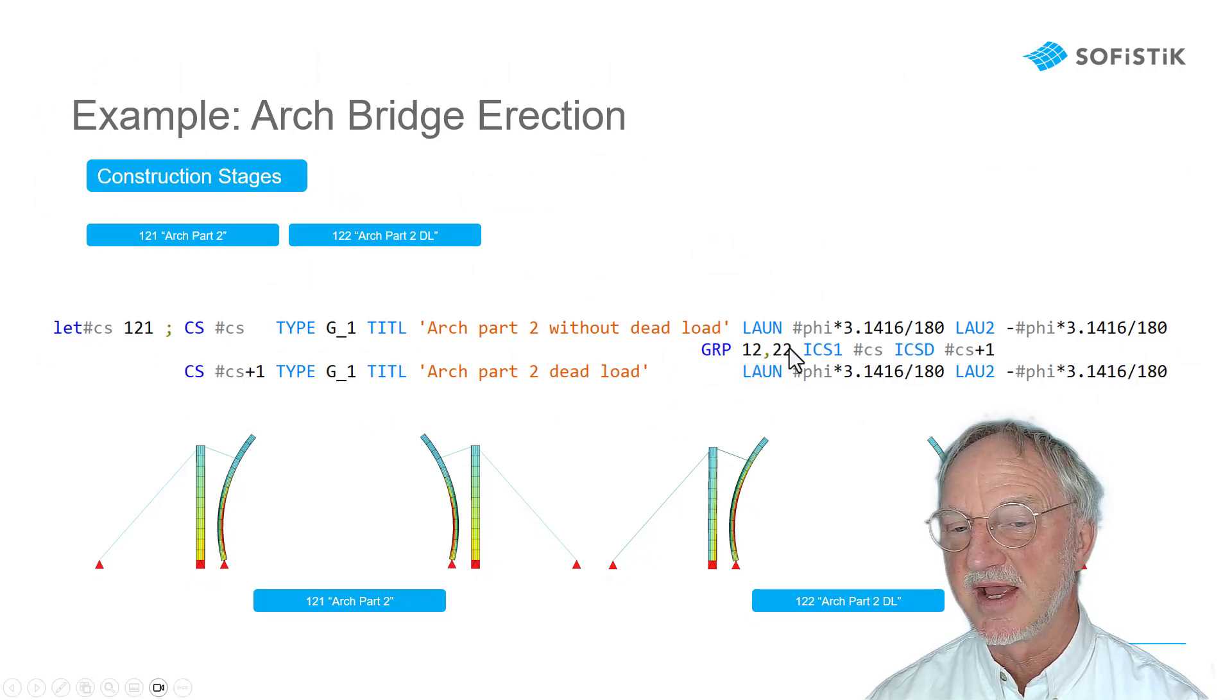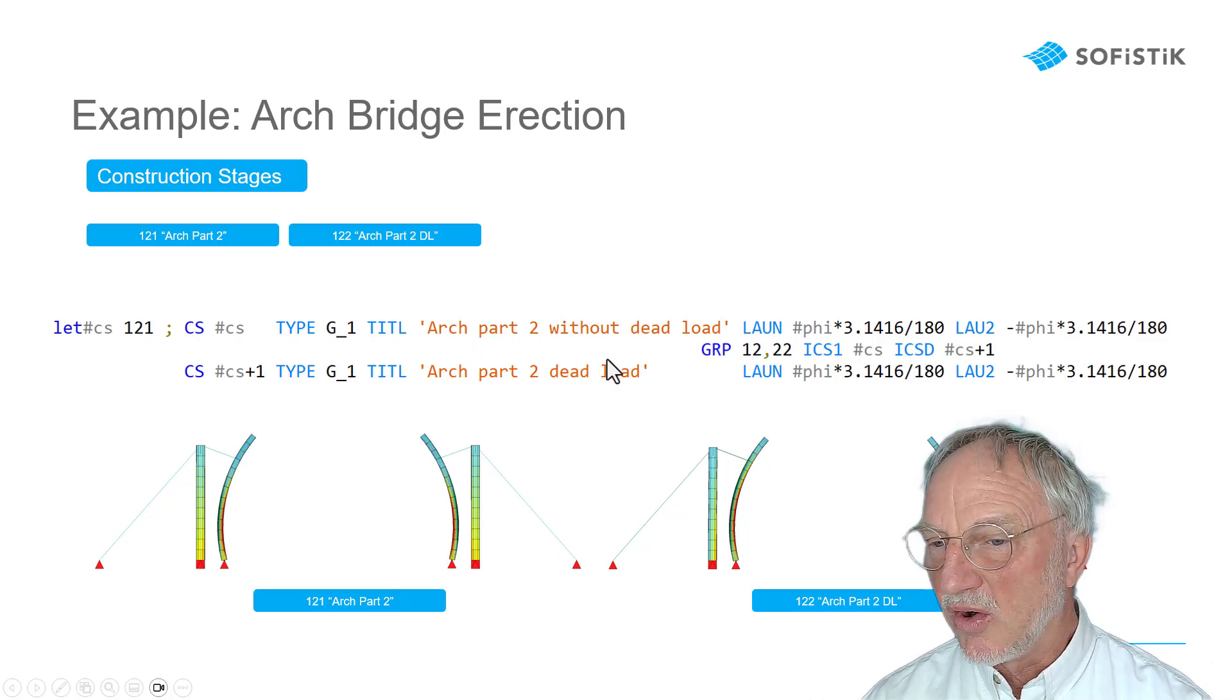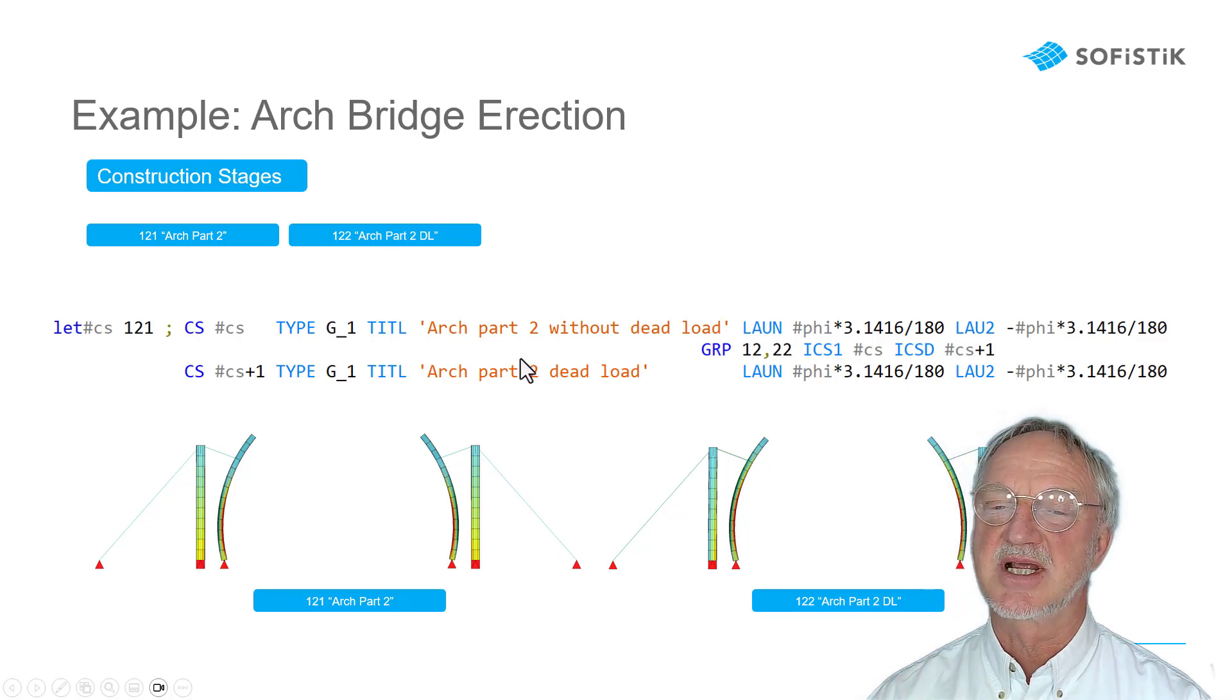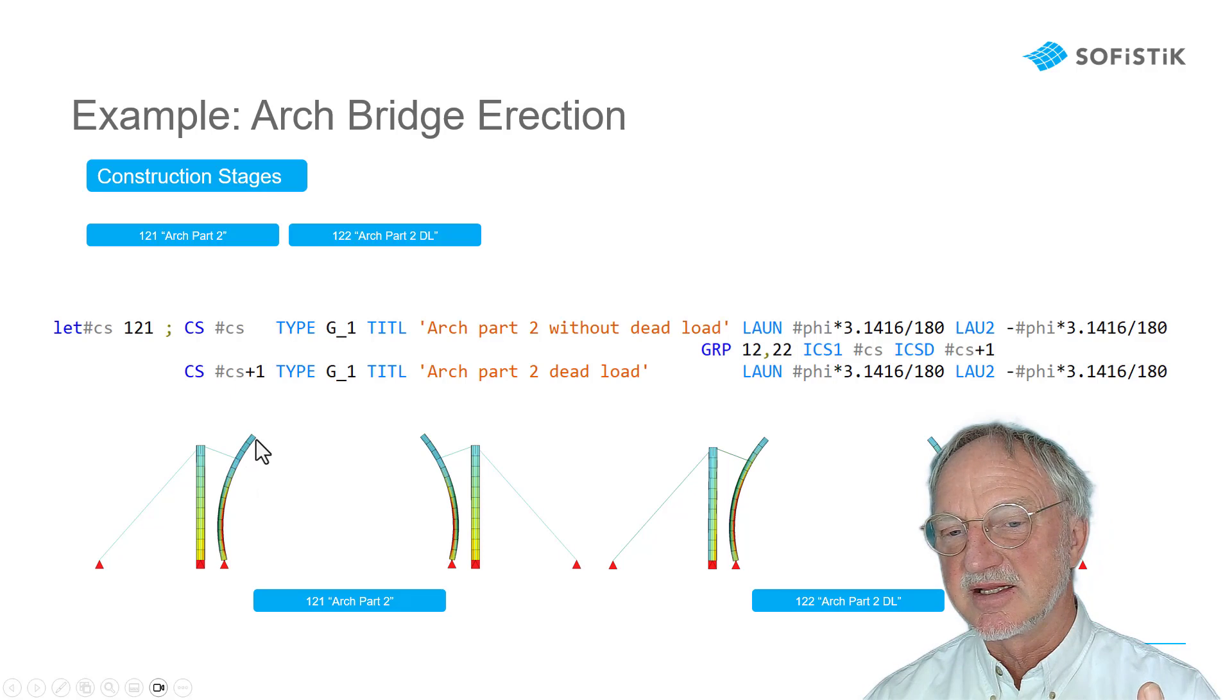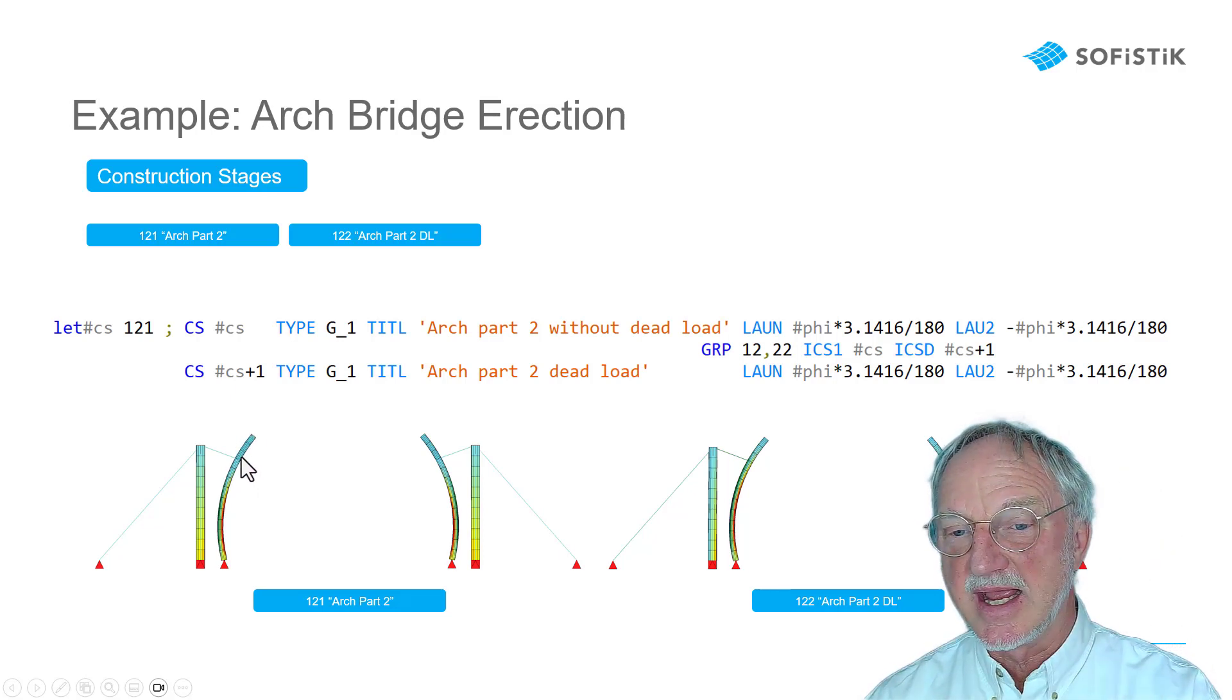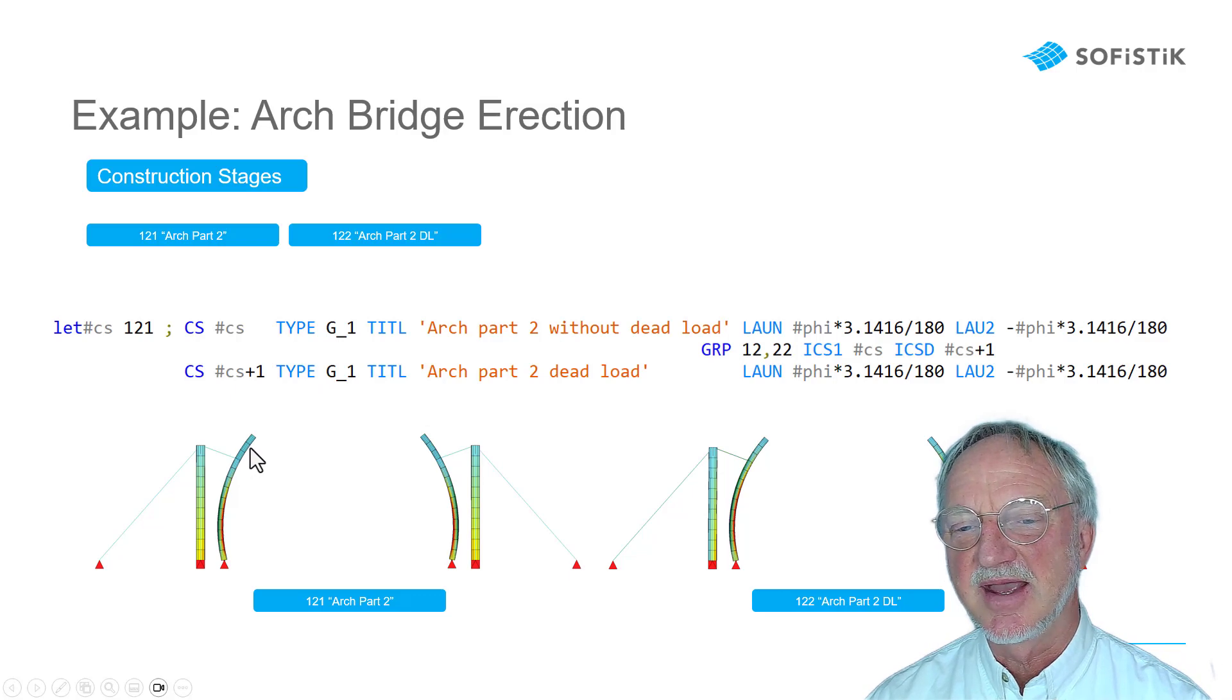In the next step we activate also group number 12 and 22. That is this part and this part. And we also make it in two steps. First only activate the segment hanging on the crane without dead load. And then in the next step activating the dead load.